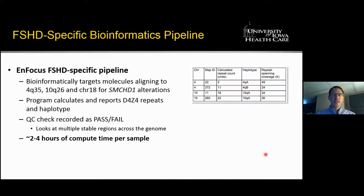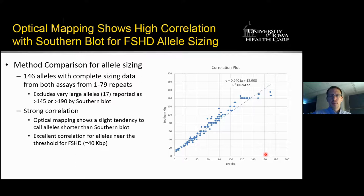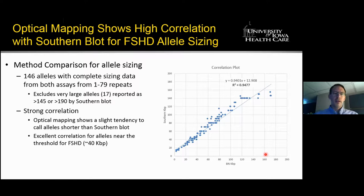Looking at our validation data for sizing, we found that optical mapping had very high correlation with southern blot analysis. The graph shows BioNano sizing on the x-axis and southern blot analysis on the Y-axis. We had 146 unique alleles representing 1 to 79 repeats, showing greater than 94% correlation. With smaller alleles, sizing is much tighter, whereas larger alleles show more spread. Alleles greater than 145 kilobases or 190,000 base pairs by southern blot could not be sized by southern, so adequate comparison wasn't possible for those 17 alleles, which included both chromosome 4 and chromosome 10 alleles.